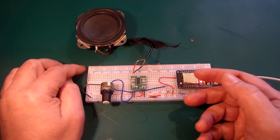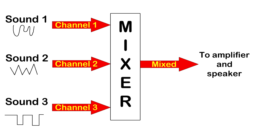I wanted to allow for multiple channels — a channel is just like a sound, a voice as some computers would call it. Basically, how many different things you could play at once. So you could have a WAV playing and then a music instrument at the same time and they would be mixed. I also wanted to allow for easier future expansion of the code, which means it definitely had to come out of that interrupt routine.